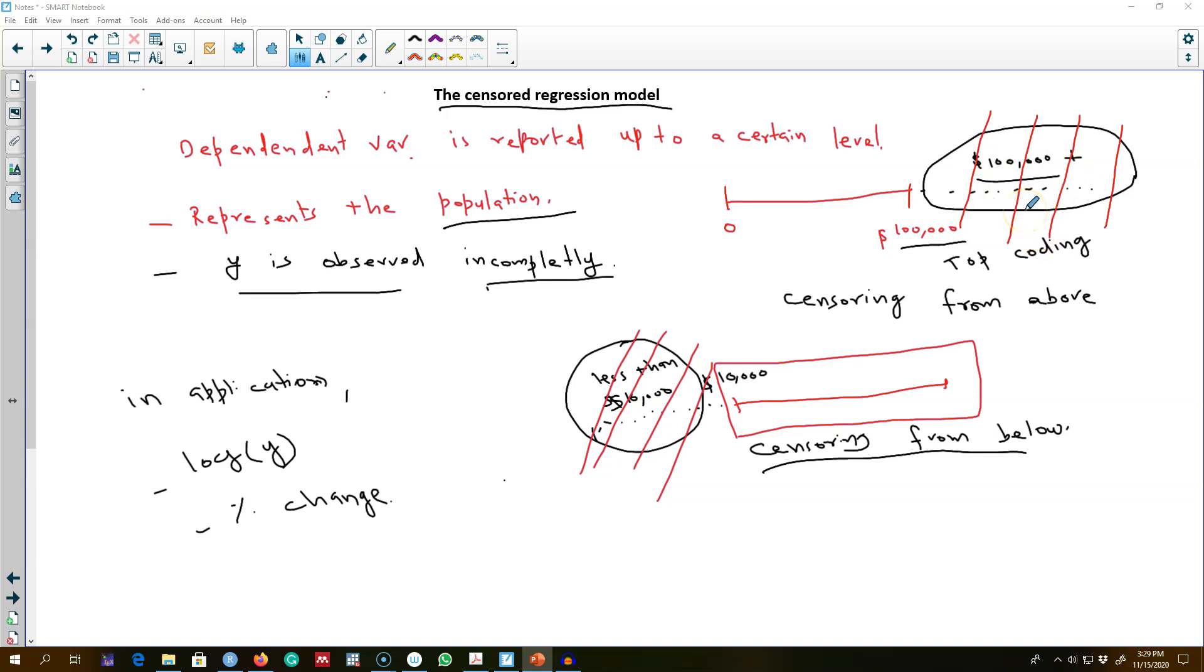On the other hand, for the truncated regression, we entirely ignore this part of the population and do not pick a sample from this part of the population and concentrate only on a certain range of values from the population.